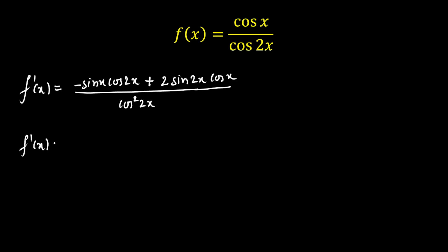So f prime of x here will be equal to, let's take sin x common here. If I take sin x common, remaining is cos 2x, negative times cos 2x, and here I am going to open this sin 2x as 2 sin x cos x. From this, I am going to take sin x common. So remaining is plus 4 cos squared x here and divide by cos squared 2x.